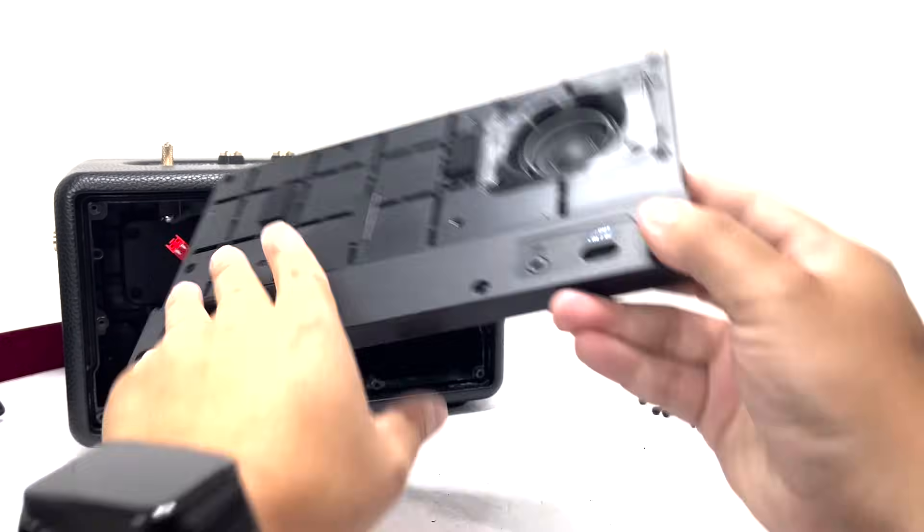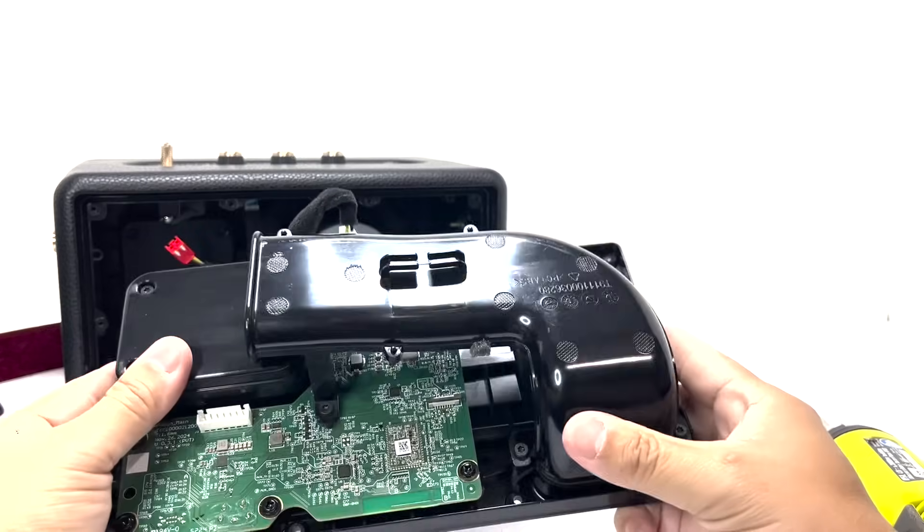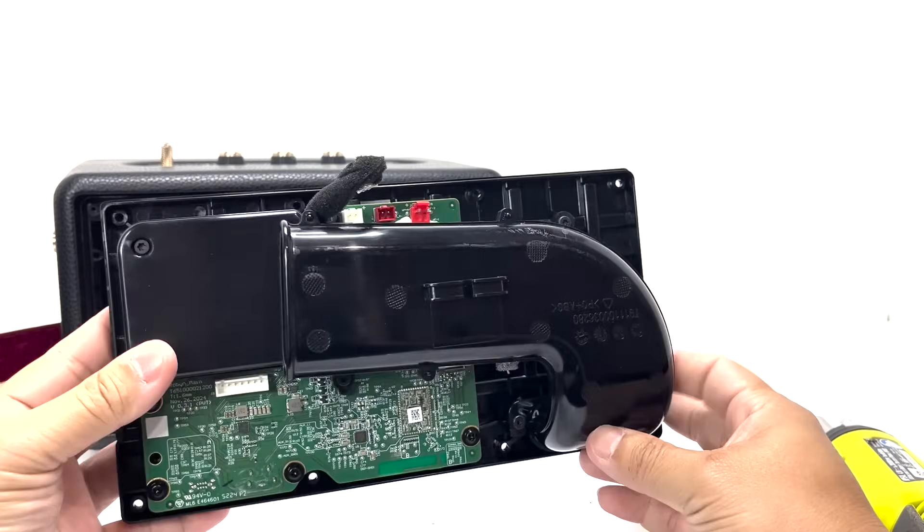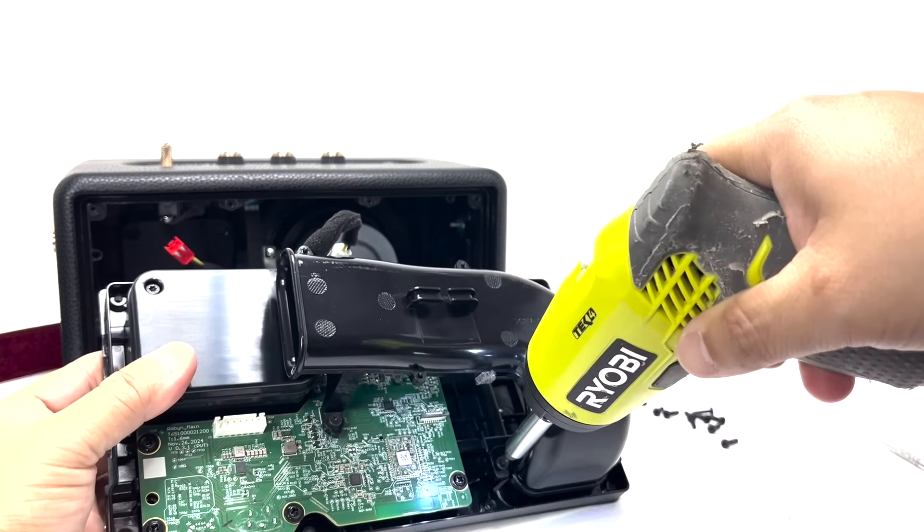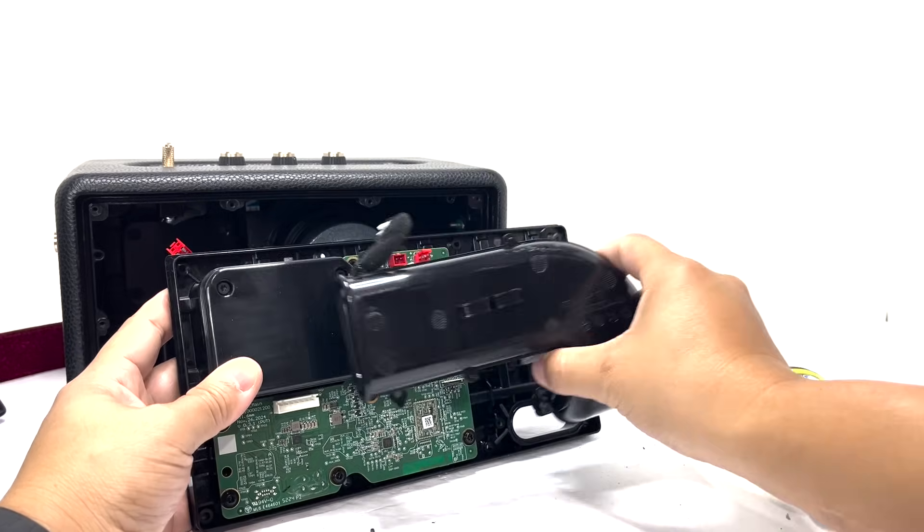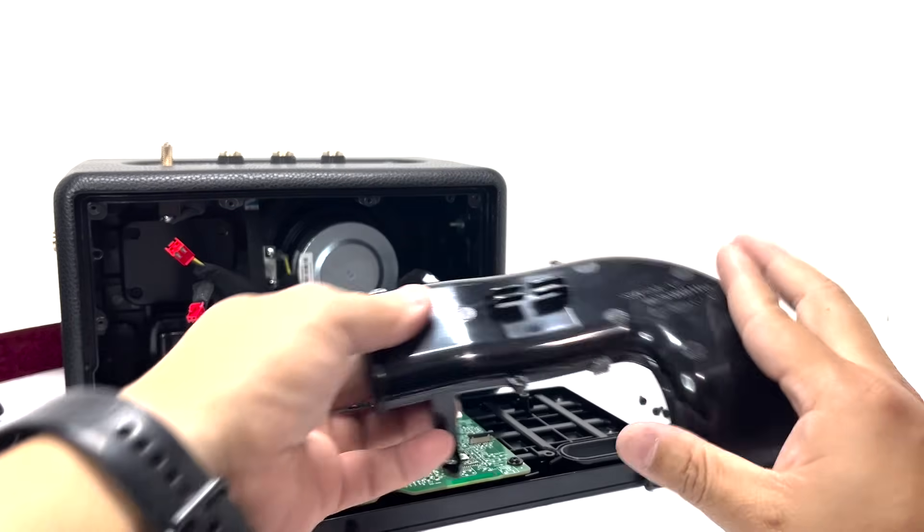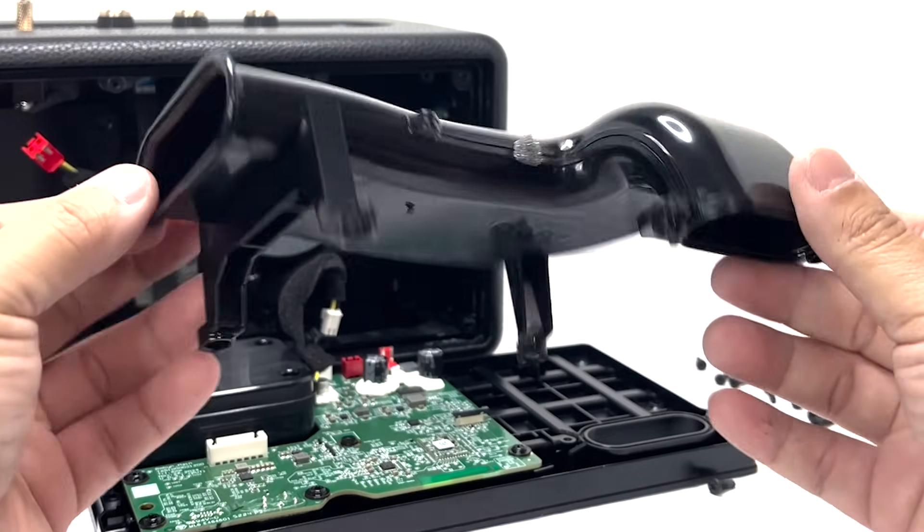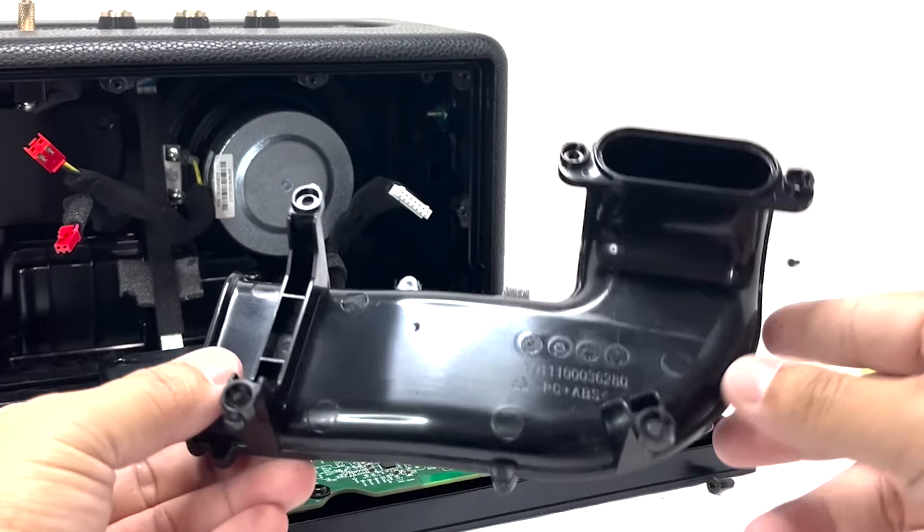Now that we have the rear panel removed, we can start with unscrewing the five screws holding the port tube in place. This hard plastic tube is engineered to optimize airflow and enhance low frequency performance.